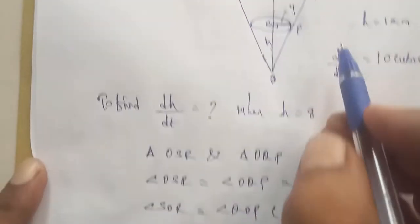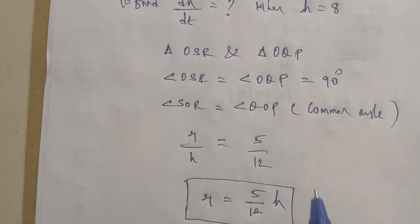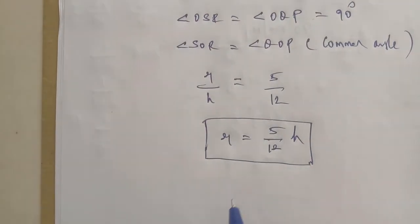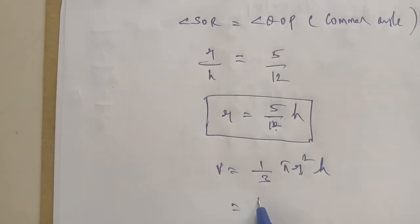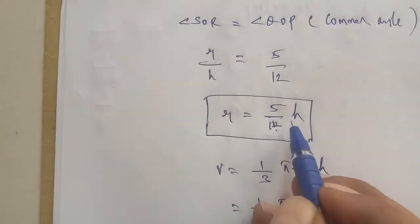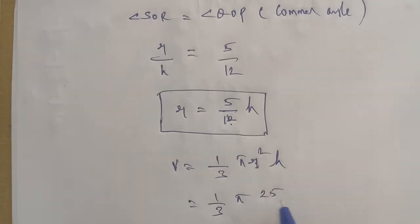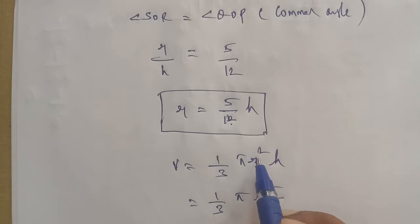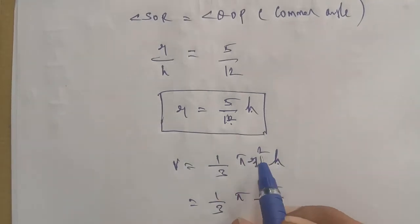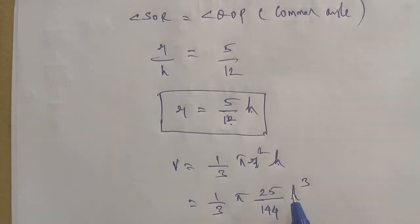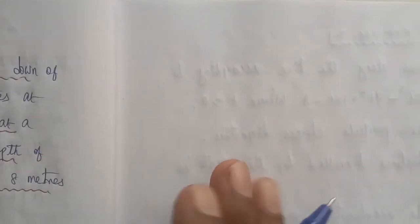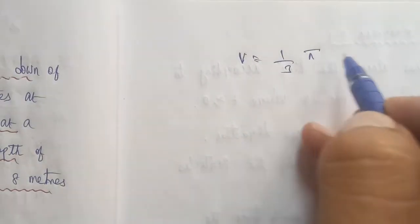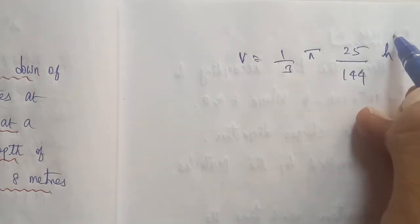So r is equal to 5 by 12 into h. Next, the volume of the cone formula: v is equal to 1 by 3 pi r square h. Next, substitute the radius value: 1 by 3 pi, r square, so r square becomes 25 by 144, into h square. So h square.